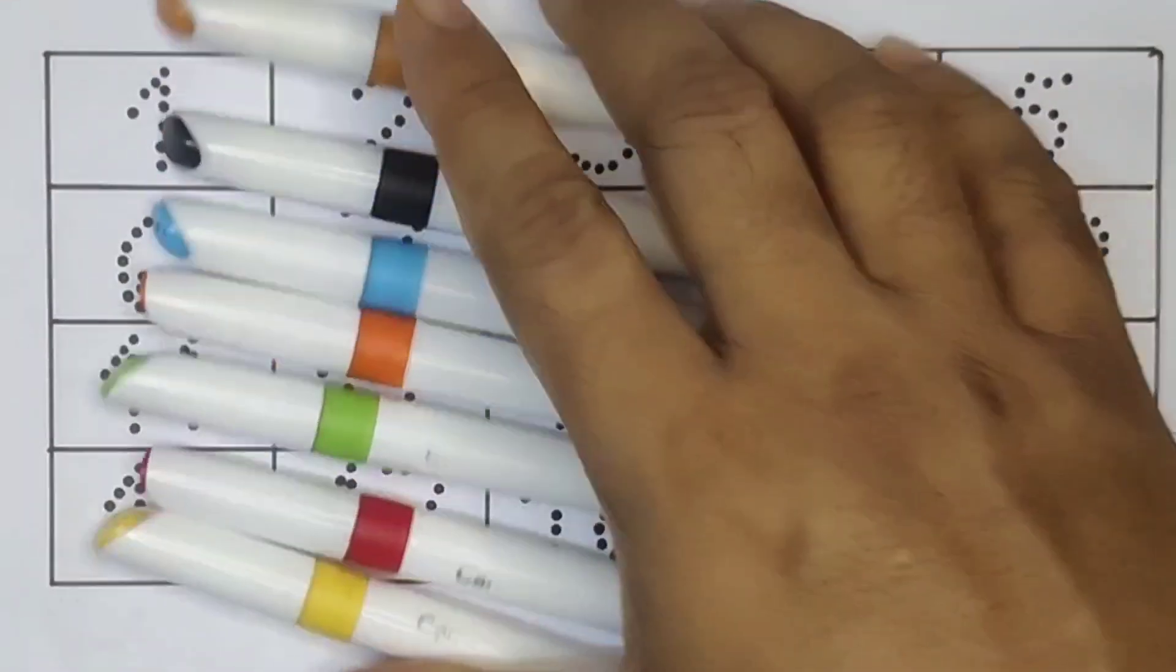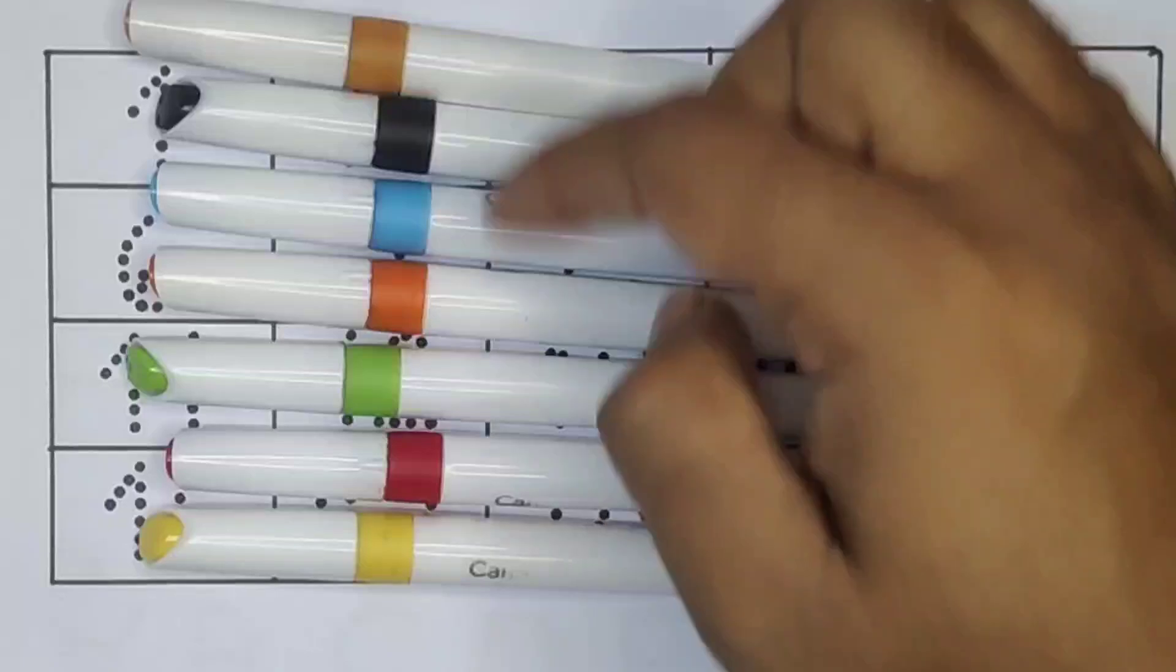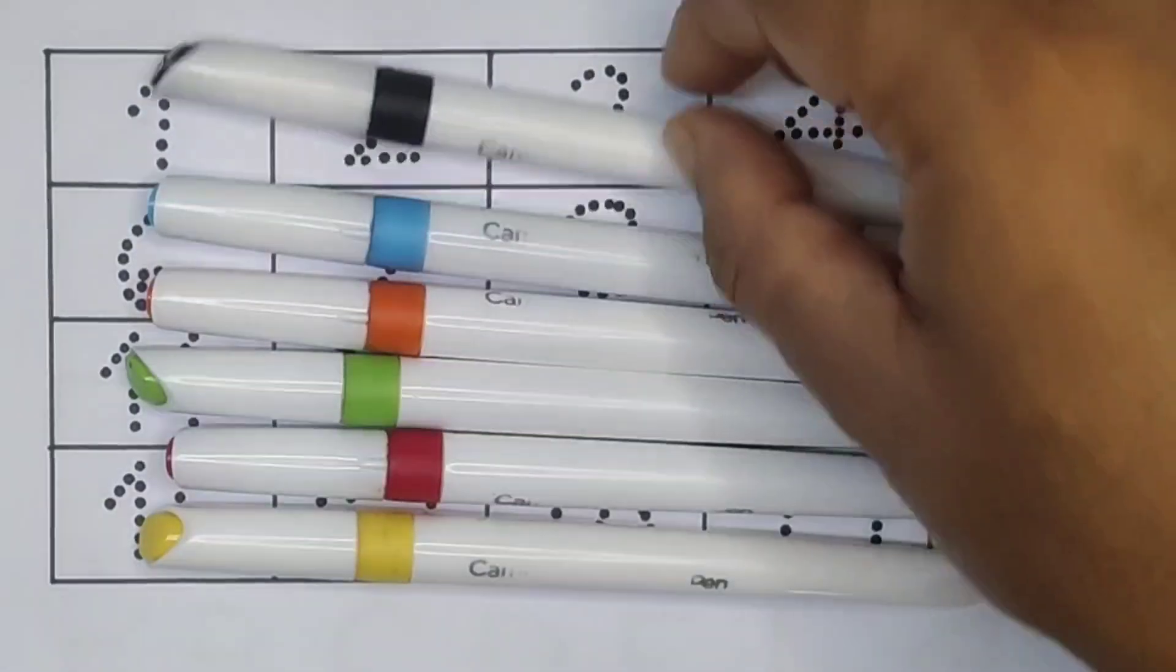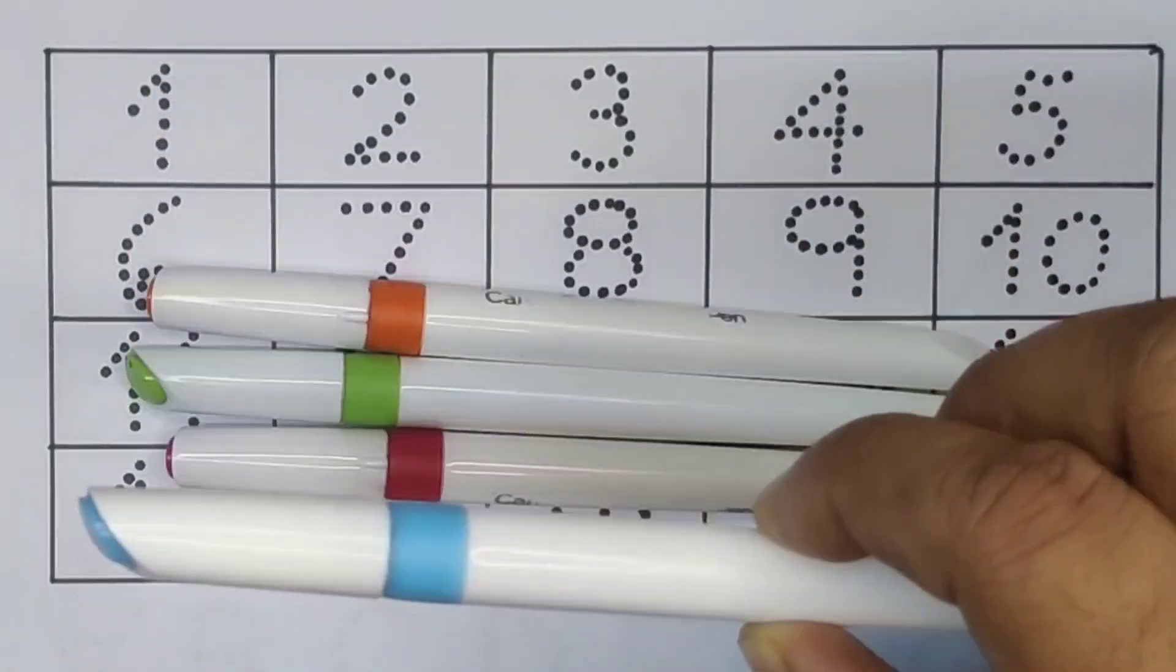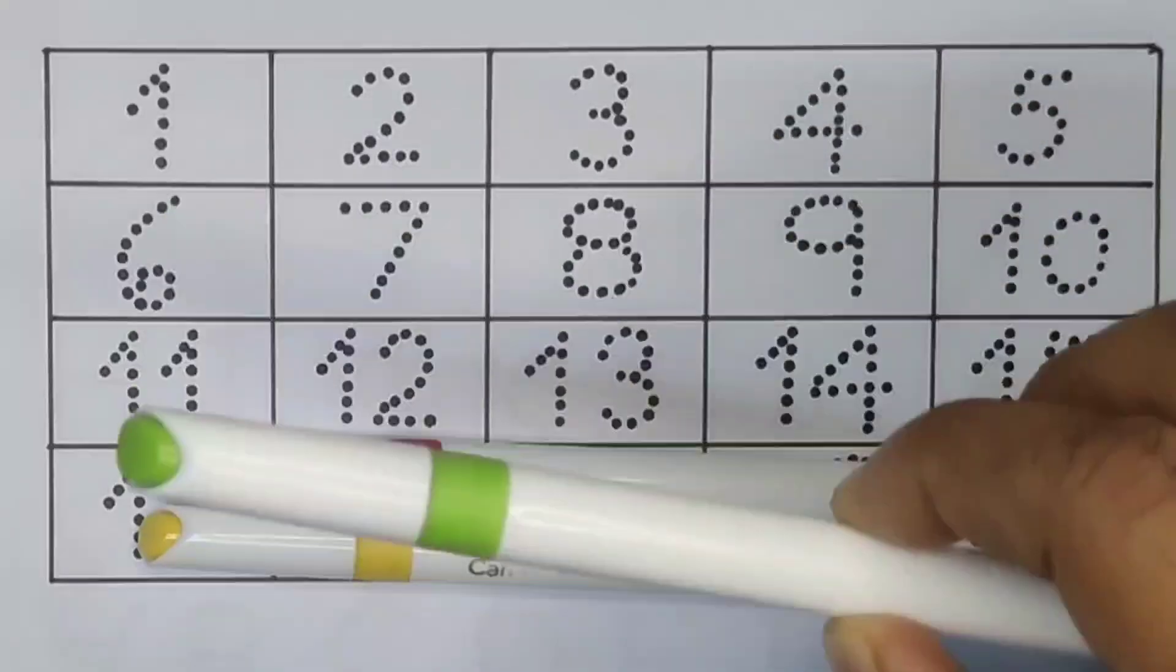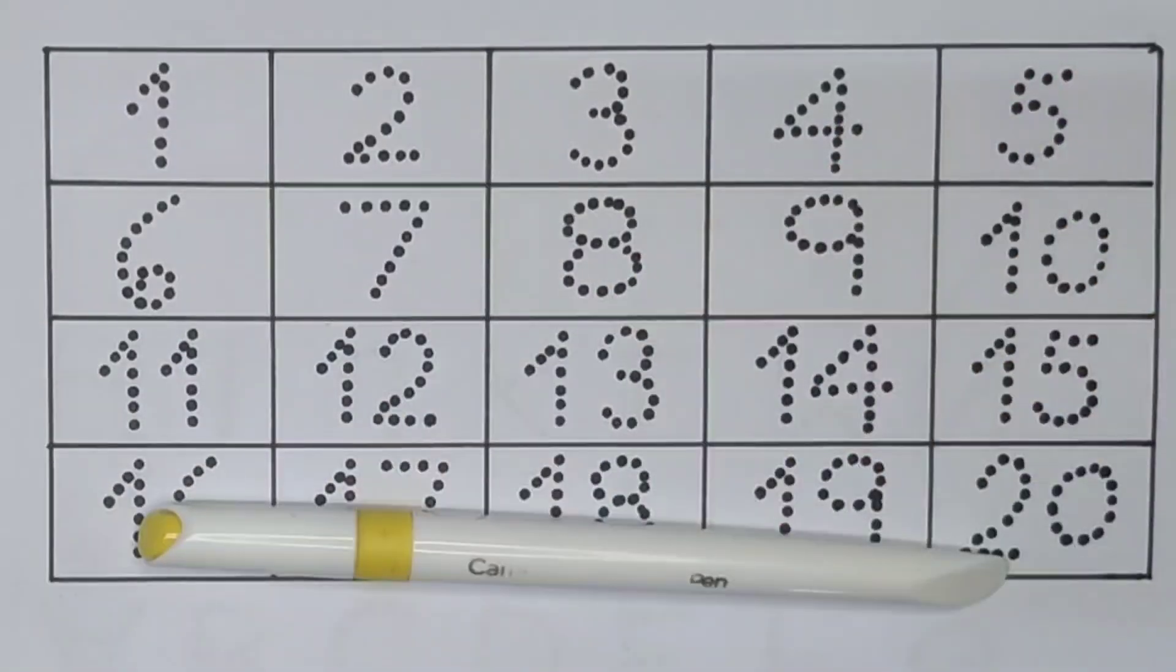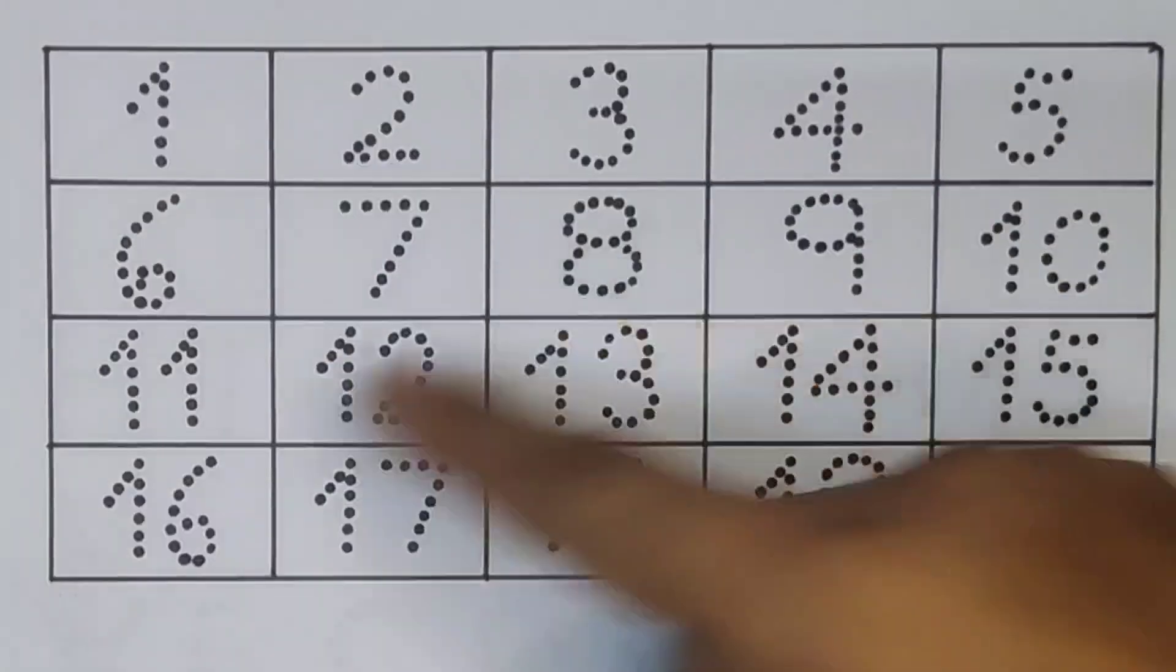Hello kids, welcome to my new video. First we're going to know the colors: brown, black, sky blue, orange, light green, red, yellow. Now let's learn the numbers counting 1 to 20.